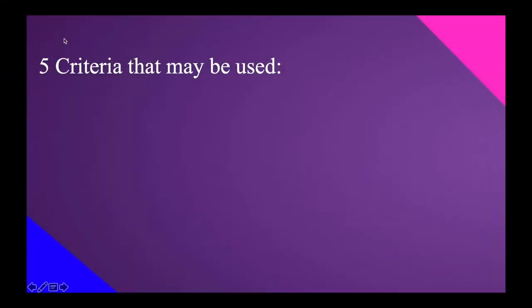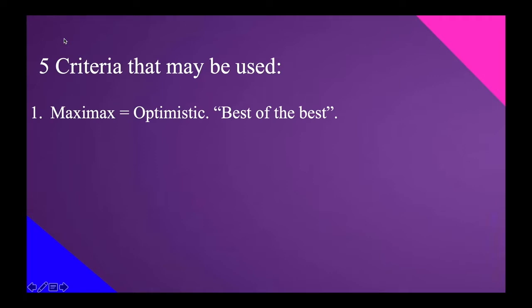We have here the five criteria that may be used in solving the decision-making under uncertainty. For the first one, we have the MaxiMax criterion. This is actually a very optimistic criterion that chooses the best decision in the manner of the best of the best — what is the maximum of all the maximum. Max of Max. MaxiMax.